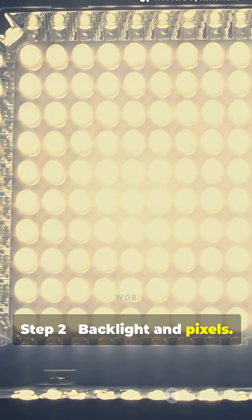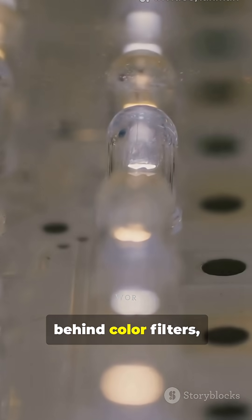Step 2. Backlight and pixels. For LCDs, a uniform LED backlight sits behind color filters, while OLED lights each pixel itself. No backlight needed.